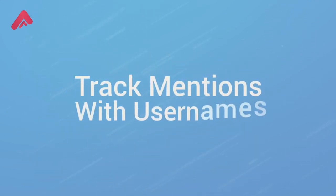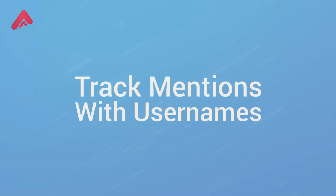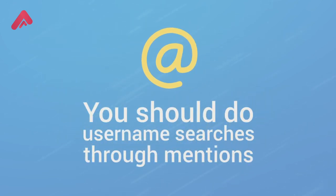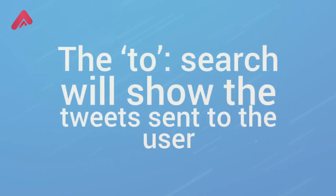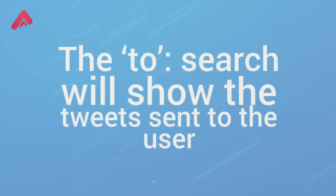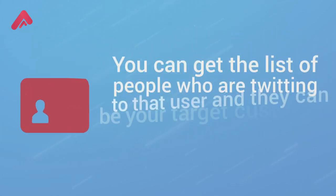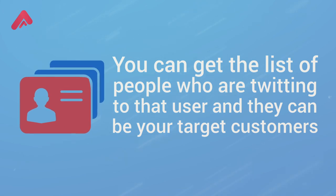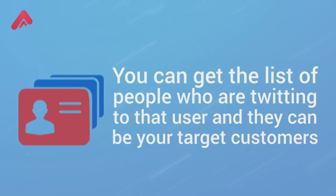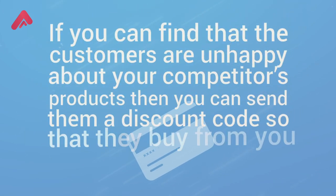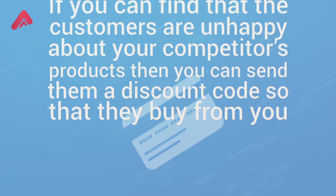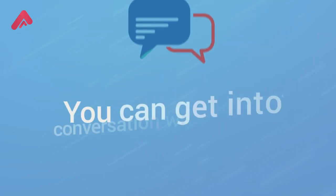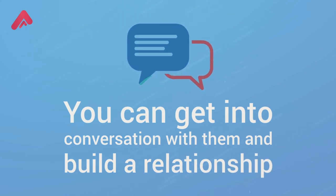Track mentions with usernames. You should do username searches through mentions. The search will show the tweets sent to the user. You can get the list of people who are tweeting to that user, and they can be your target customers. If you find that customers are unhappy about your competitors' products, you can send them a discount code so that they buy from you.